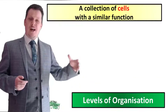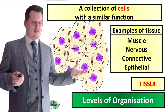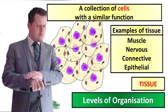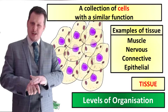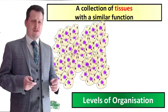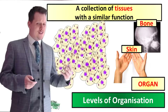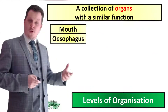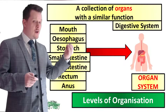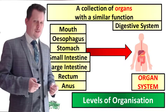If you have a collection of cells with a similar function then that gives you a tissue. Examples being muscle tissue, nervous tissue, connective tissue, and epithelial tissue which is what we call the tissues which make up the skin. A collection of tissues with a similar function gives us an organ. Examples of organs are bone and skin. A collection of organs with a similar function gives us an organ system. Here we have the organs which food passes through and which makes up part of the digestive system.